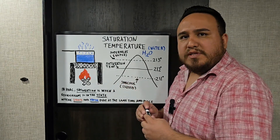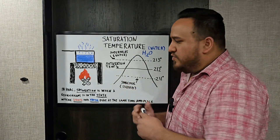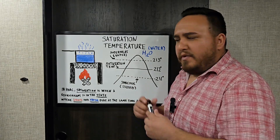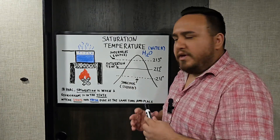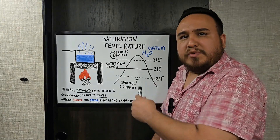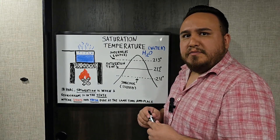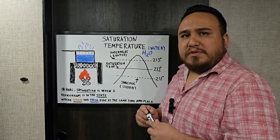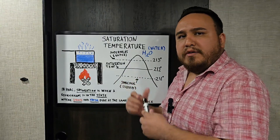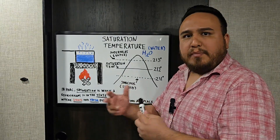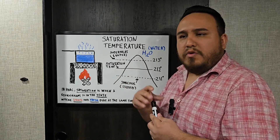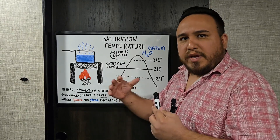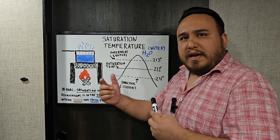For right now, instead of using a refrigerant, I'm going to use water so you can understand how saturation temperature works. Water is also used as a heat medium transfer — there are big air conditioning systems known as chillers, used in schools or hospitals, that use water as a heat medium transfer to either heat or cool a place down. They're big systems, and they use water as a heat medium transfer.